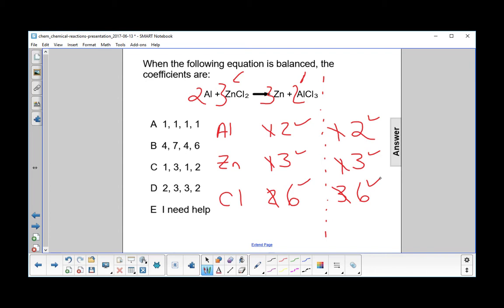And you can go through the top again. So two aluminums. On the right-hand side, there's two aluminums. Three zincs on the left, three zincs on the right. Six chlorines on the left, six chlorines on the right. So what do we have? We have 2, 3, 3, 2.